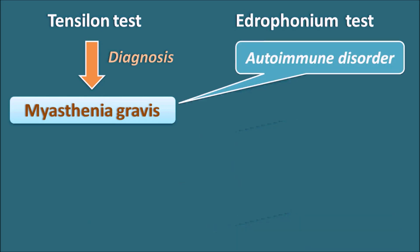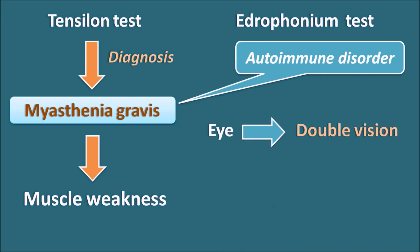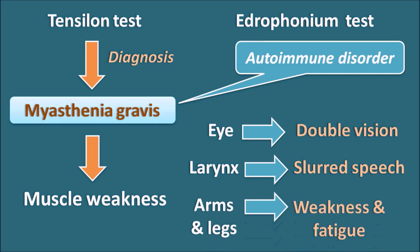Myasthenia gravis is an autoimmune disorder that mainly results in muscle weakness in the patient. Since it is an autoimmune disorder, muscle weakness is observed in various groups of skeletal muscles at different organs. For example, it can affect the eye, resulting in double vision, affect the skeletal muscles at the larynx resulting in slurred speech, and affect the arms and legs resulting in muscle weakness and fatigue.